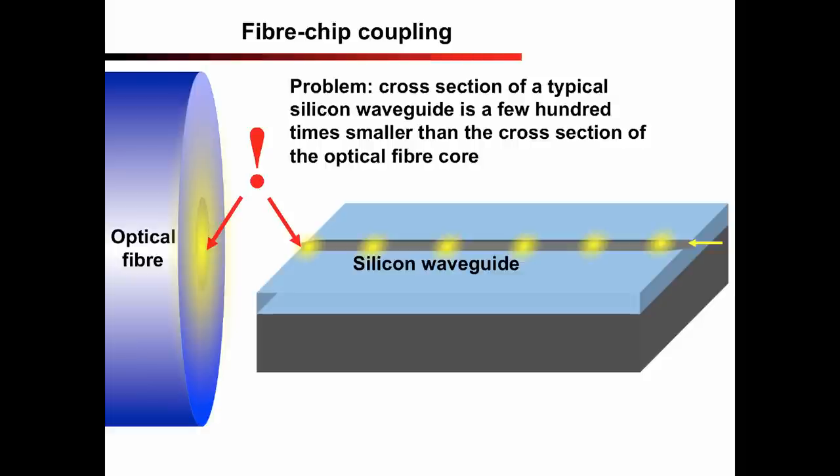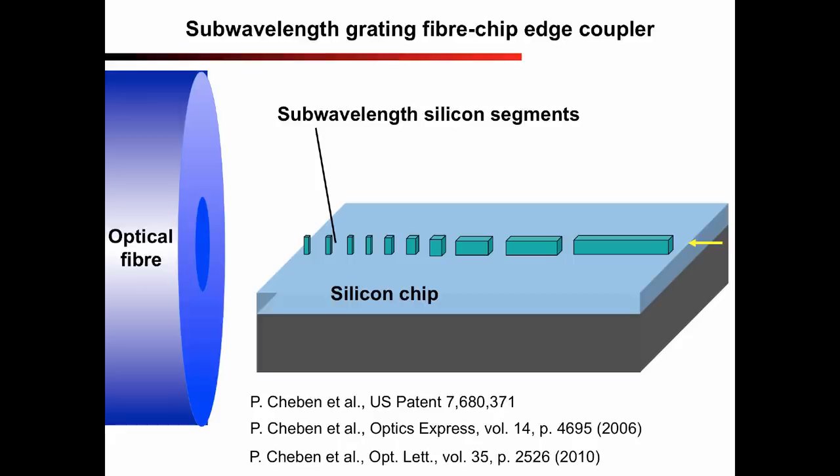Therefore, development of efficient fiber chip coupler is a hot topic in silicon photonics. At NRC Canada, we have developed a highly efficient fiber chip coupler exploiting the idea of the subwavelength grating waveguide. The principle of operation is that the size of the silicon segment is gradually decreasing towards the chip edge where the optical fiber is placed.